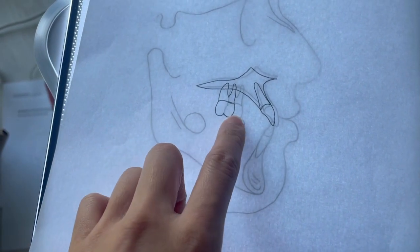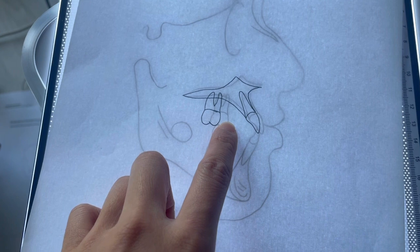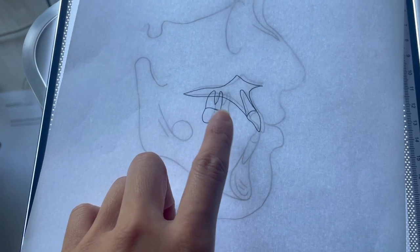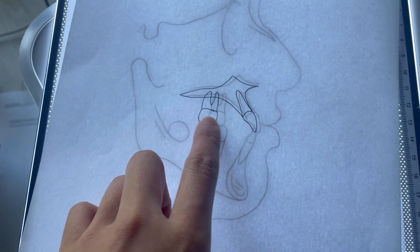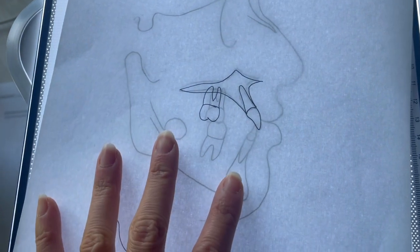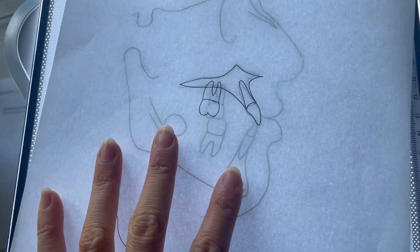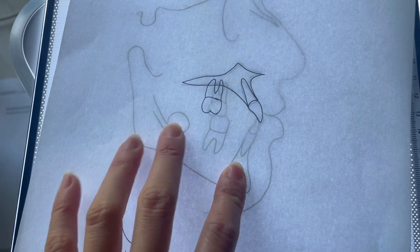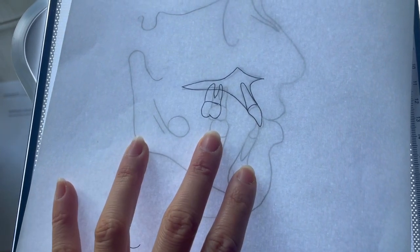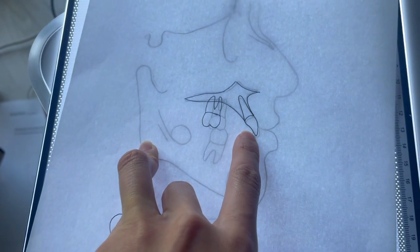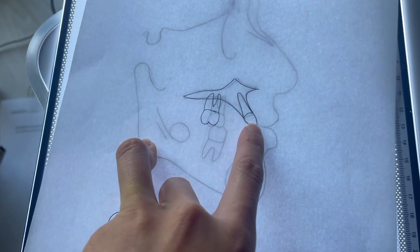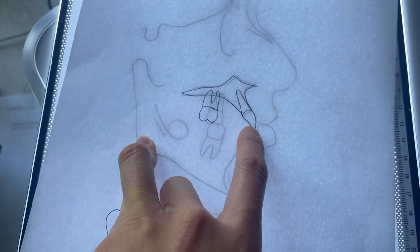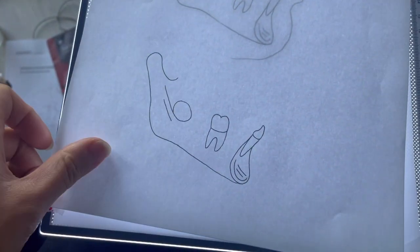If for example my molar had moved a complete premolar's width, I know that can't be right because I've utilized the space for crowding, not for molar mesialization. I know that my incisors, I've pretty much maintained them. I haven't proclined them or retroclined them. I've maintained them. So I shouldn't get as much movement in my maxilla.